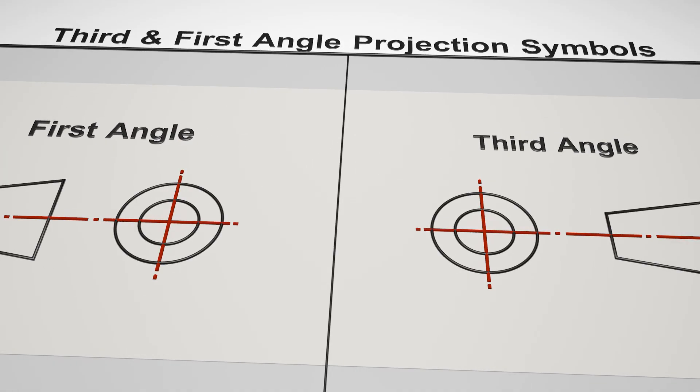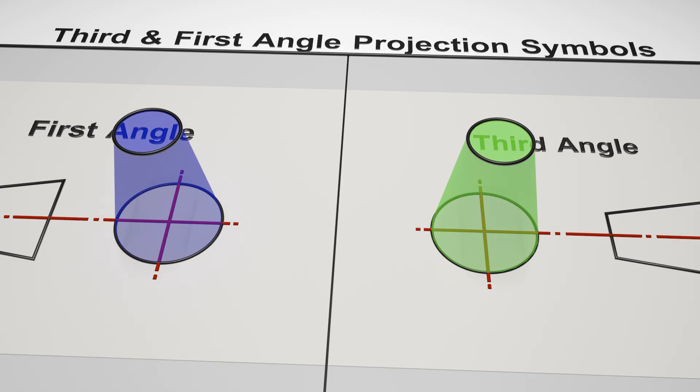Now, if you hadn't already realized it, these symbols represent two orthographic views of a truncated cone laid out in the respective projective method that the symbol is representing.